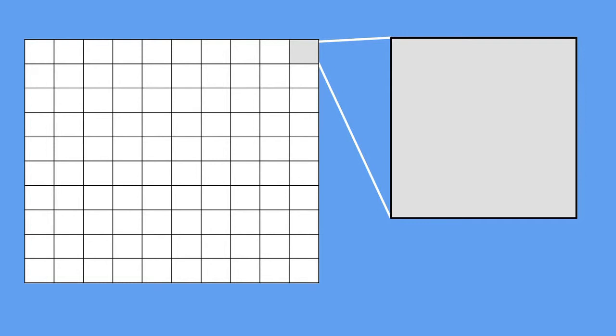High resolution data includes things like six inch by six inch data, one meter by one meter data. Moderate resolution data is oftentimes at 20 or 30 meter by the same on each side. So you get these nice squares.